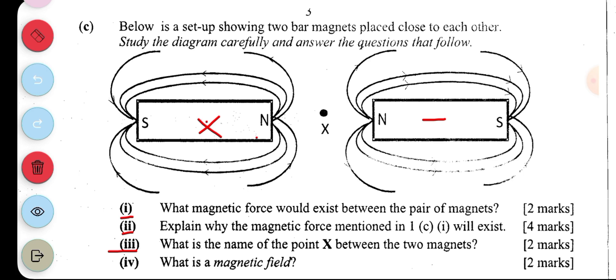And part four, what is a magnetic field? A magnetic field is an area around a magnet where magnetic force or magnetic influence can be felt.